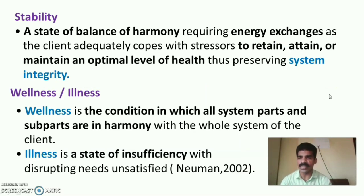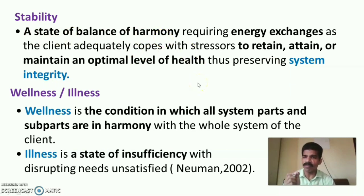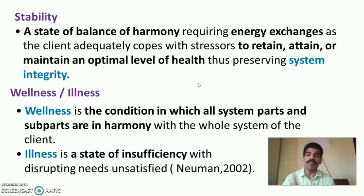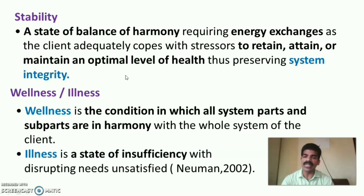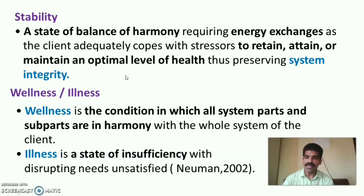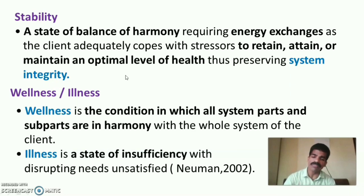Stability is a state of balance or harmony requiring energy exchanges, as the client adequately copes with stressors to retain, attain, or maintain an optimal level of health or well-being, thus preserving normal system integrity. According to Neuman, wellness is the condition in which all system parts and sub-parts function in harmony with the whole system. Illness is a state of insufficiency with disrupting needs unsatisfied — when the person is unable to cope with various stressors.